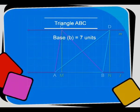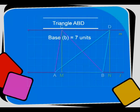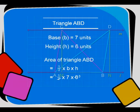So in triangle ABC, the base is 7 units and the height is 6 units. The area of triangle ABC equals half into 7 into 6, which is 21 square units. And even in triangle ABD, the base is 7 units and height is 6 units, and the area of triangle ABD equals half into 7 into 6, which is 21 square units.